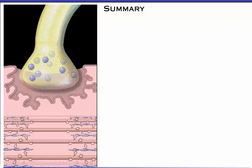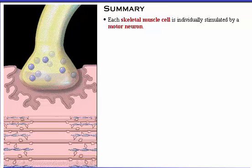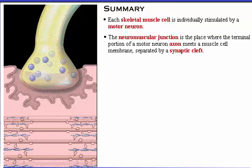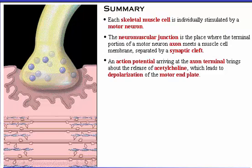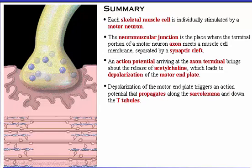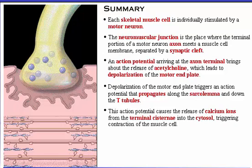Here's a summary of what we've covered. Each skeletal muscle cell is individually stimulated by a motor neuron. The neuromuscular junction is the place where the terminal portion of a motor neuron axon meets a muscle cell membrane, separated by a synaptic cleft. An action potential arriving at the axon terminal brings about the release of acetylcholine, which leads to depolarization of the motor end plate. Depolarization of the motor end plate triggers an action potential that propagates along the sarcolemma and down the T-tubules. This action potential causes the release of calcium ions from the terminal cisternae into the cytosol, triggering contraction of the muscle cell.